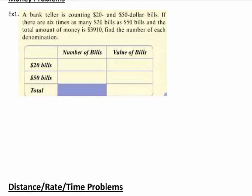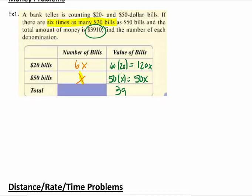When we read this, it tells me we have 6 times as many $20 bills as $50 bills. We're going to call our number of $50 bills x and the number of $20 bills 6x. So the value would be 20 times 6x, which is 120x. My $50 bills would be 50 times x, which would give me 50x. And they tell me the total amount of money I have is $3,910. So my equation is the $20 bill values plus the $50 bill values equals the total.